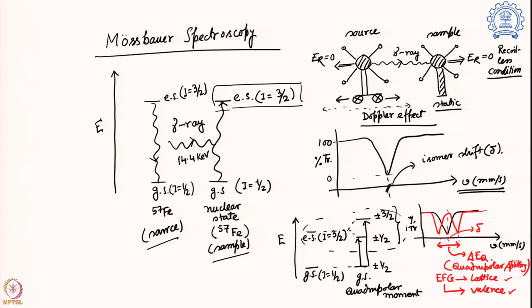This is the basic foundation of Mössbauer spectroscopy we have covered so far. We have looked at different applications and examples that give us information on the oxidation state, spin state, and coordination geometry of iron. We will continue with more examples, and example number 7 — having covered six already — is on ferrocene.